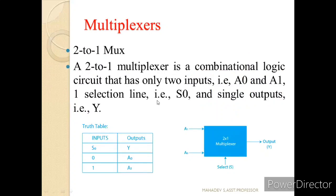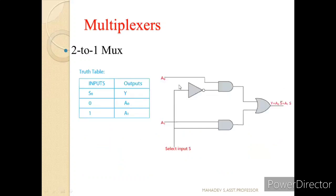Now let us study the 2-to-1 multiplexer in detail. Looking at the truth table: when the select line is 0, input A0 is selected and passed to the output; when the select line is 1, input A1 is selected and passed to the output. If you represent this with basic gates, output Y is a function of a two-input OR gate, where one input is connected to an AND gate. When S is 0, A0 is selected because it is connected through an inverter. When select line is 1, that AND gate is active and whatever we apply at A1 is passed to the output.